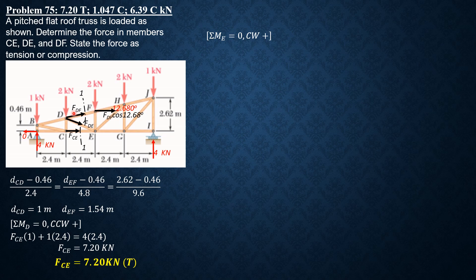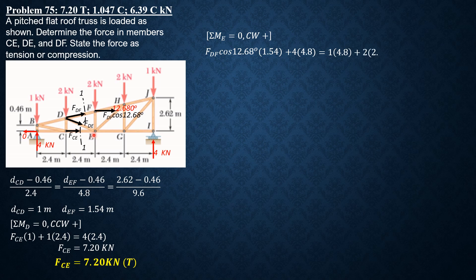The horizontal component of FDF is being considered. FDE and FCE will not be involved in the moment equation. Summation of moments about E equals zero, clockwise positive: FDF cosine 12.68 times 1.54 plus 4 times 4.8 equals 1 times 4.8 plus 2 times 2.4. Solving gives FDF = negative 6.390 kilonewtons, or FDF = 6.39 kilonewtons compression.